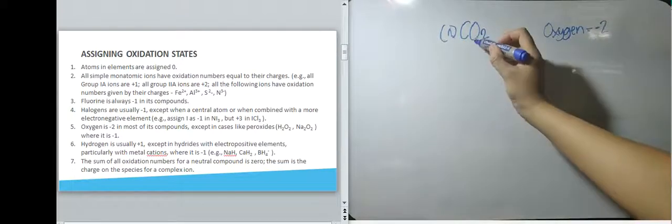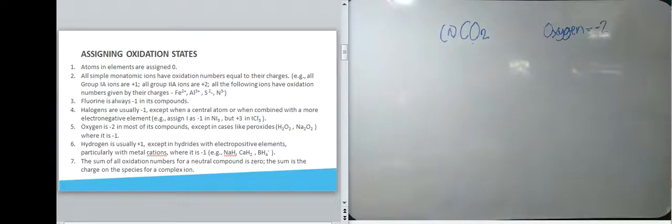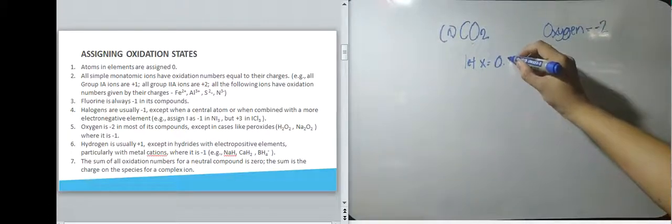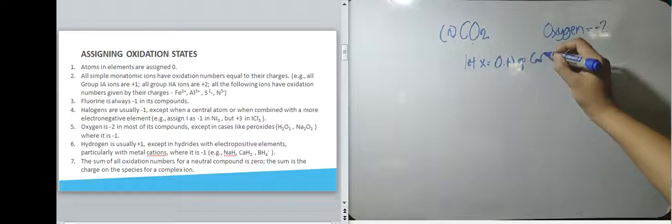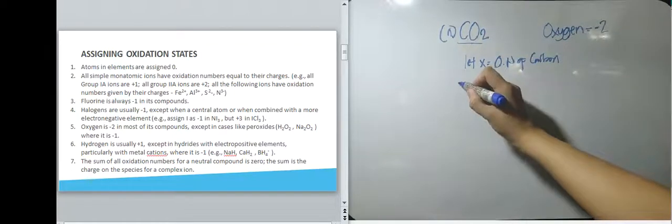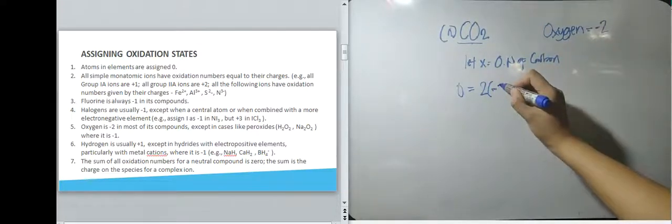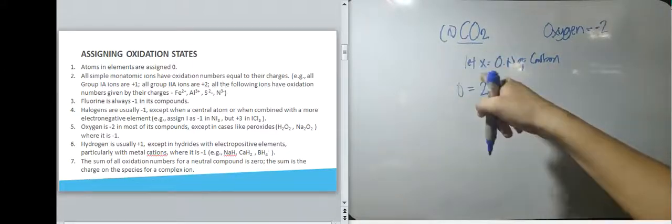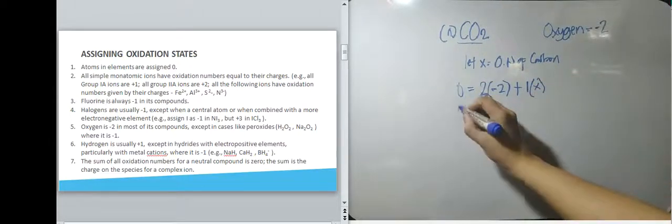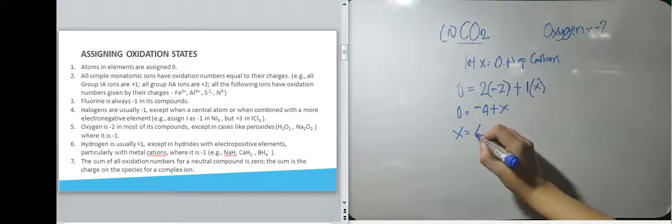So from this compound, alam na natin ang oxidation state ng oxygen. Ang hindi na lang natin alam ay oxidation state ng carbon. So let X equals oxidation number of carbon. So, itong carbon dioxide, wala naman siyang charge. Wala tayong nakitang charge. So 0. Ilang oxygen? Dalawa. Times, anong oxidation state niya? Negative 2. Plus, ilang carbon? Isa. Oxidation state? X. So therefore, negative 4 plus X. So therefore, ang oxidation state ng carbon ay 4.